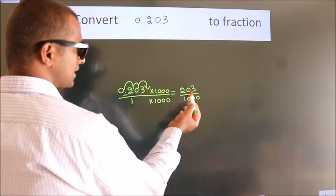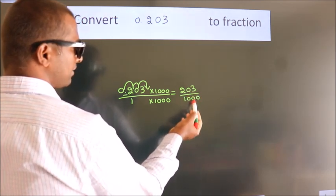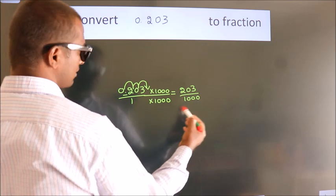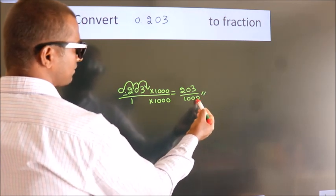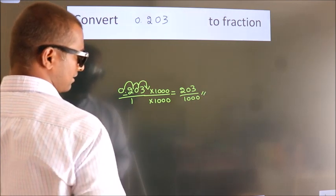This cannot be simplified any further. So this itself is our fraction — 203 over 1000.